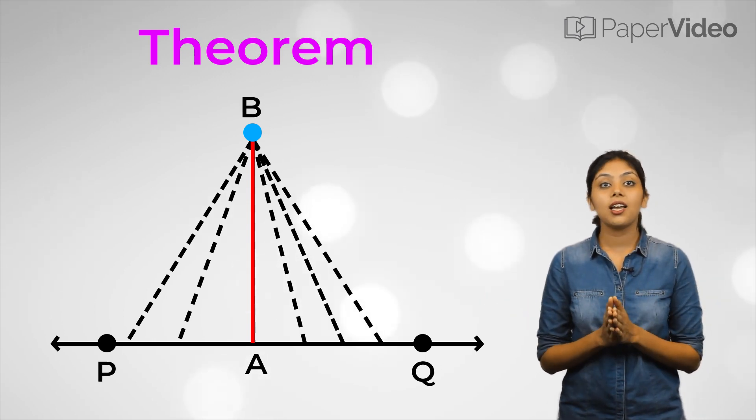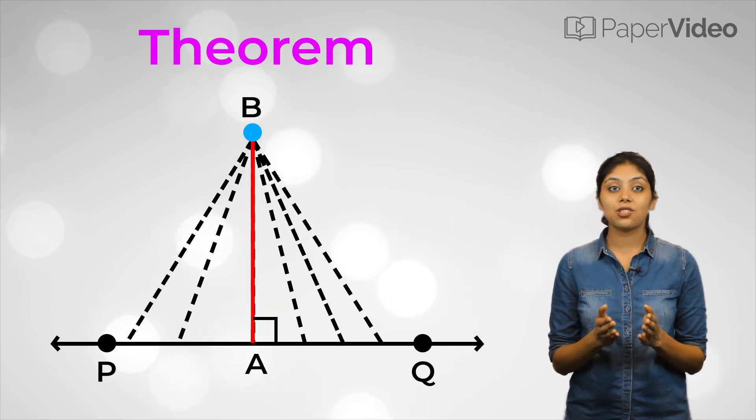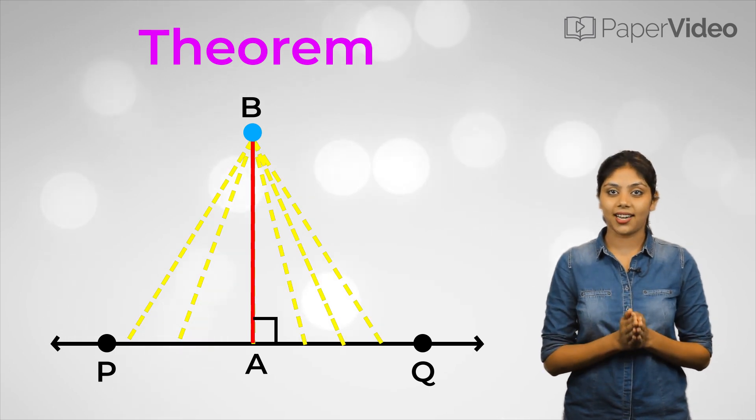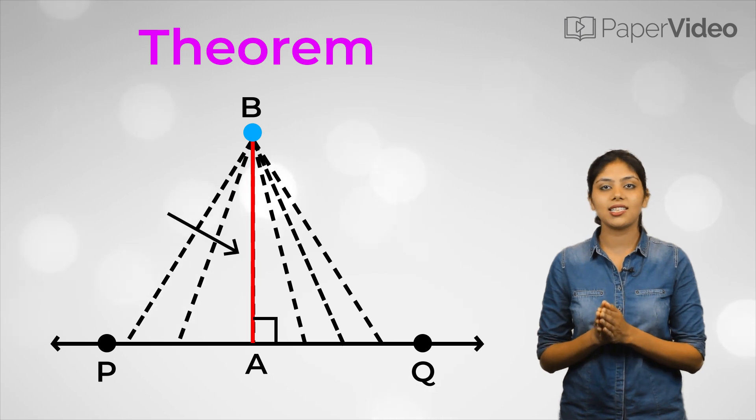And we can also see that BA is perpendicular to PQ. This leads us towards the theorem which says, of all the lines that can be drawn to a given straight line from a given point outside it, the perpendicular is the shortest.